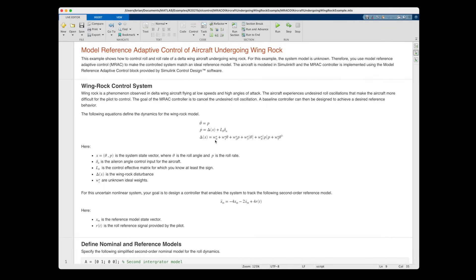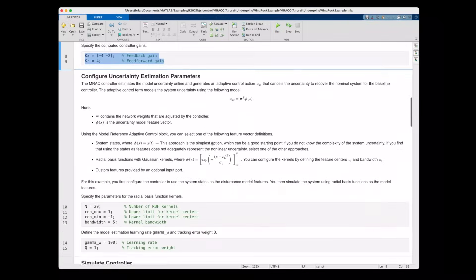Now we need to specify phi. Again, if we knew the structure was in this form up here, then we could just use those features directly in phi. However, since we don't, this example opts to use system state as the feature set at first, and then 20 radial basis functions afterwards so that you can compare the performance of both.